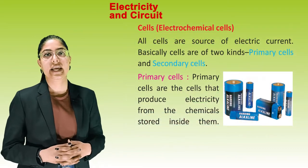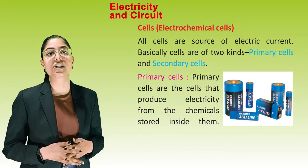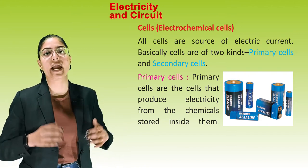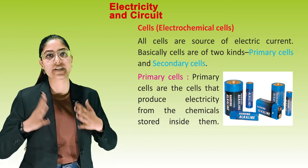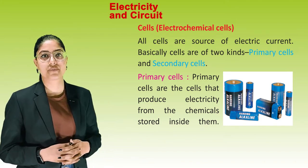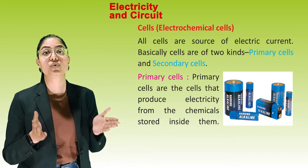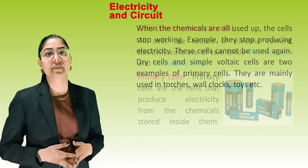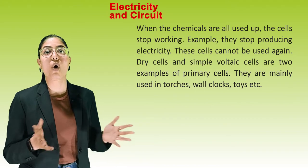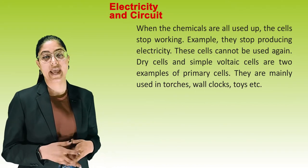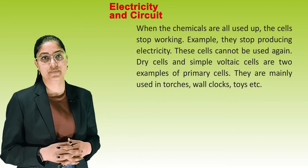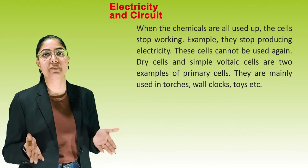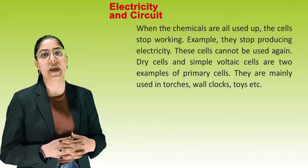Next is cells — electrochemical cells. All cells are a source of electric current. Basically, cells are of two kinds: primary cells and secondary cells. Primary cells produce electricity from the chemicals stored inside them. When the chemicals are all used up, the cells stop producing electricity and cannot be used again. Dry cells and simple voltaic cells are two examples of primary cells. They are mainly used in torches, wall clocks, toys, etc.